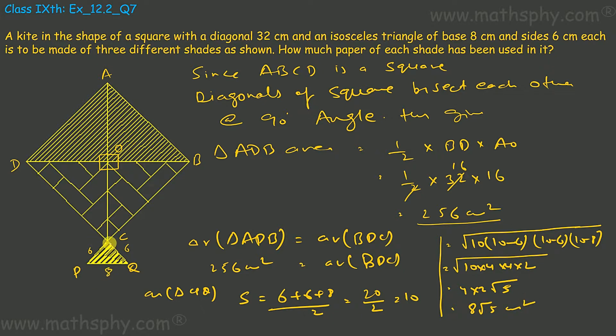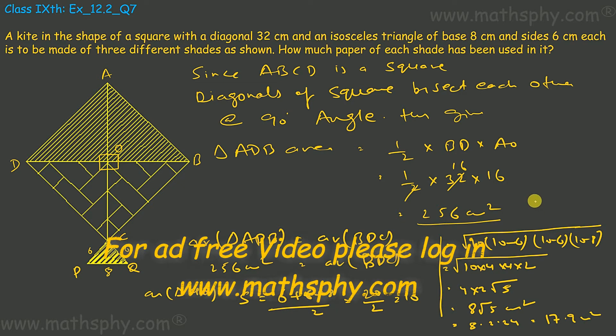So this shade or this tail would be 8 root 5 cm square. If we try to break this, root 5 is 2.24, 8 into 2.24 comes to 17.9 cm square approximately. So you can write it as 8 root 5 cm square or you can break it to 17.9 cm square, same thing. So this shade, this shade and the third shade all done.